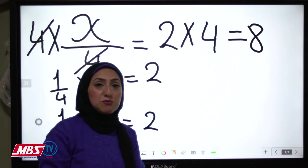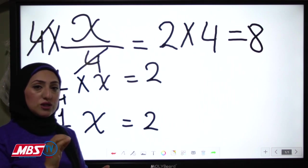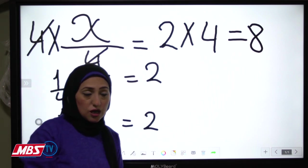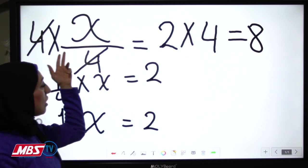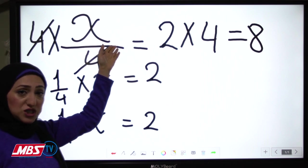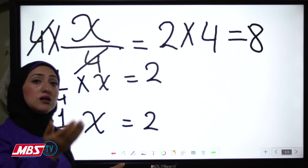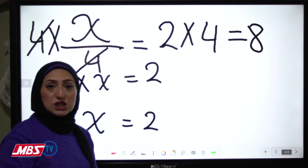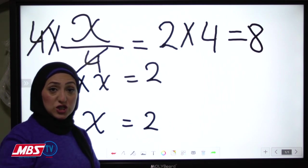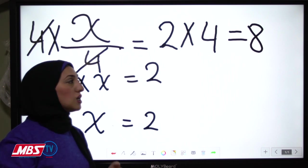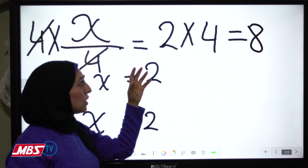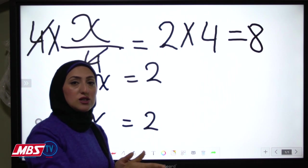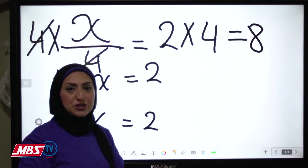Now I've finished the lesson but I want to revise the important points. To find the value of x: use subtraction to undo addition, addition to undo subtraction, division to undo multiplication, and multiplication to undo division — always doing the same operation on both sides. Thank you and I hope you enjoy the lesson.